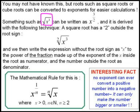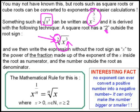Look at this: something such as the square root of x cubed can be written as x to the power of 3 over 2. This is derived with the following technique. A square root always has a 2 outside the root sign — we don't always write the 2, but it's still there. When we write this expression without the root sign, we make a fraction in the exponent by taking the number outside the root sign and bringing it in as the denominator. So this becomes x to the power of 3 over 2.